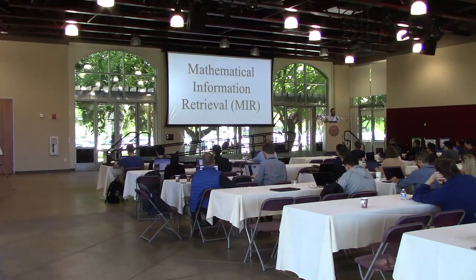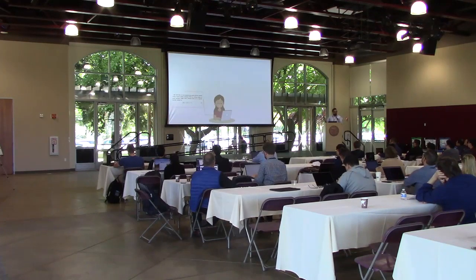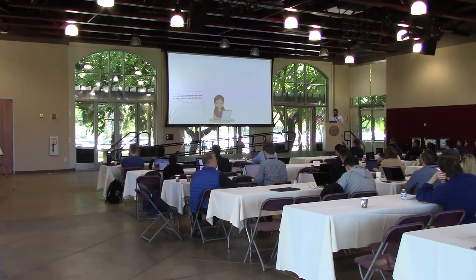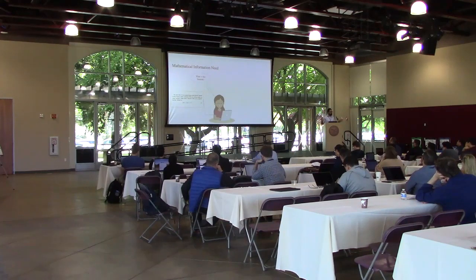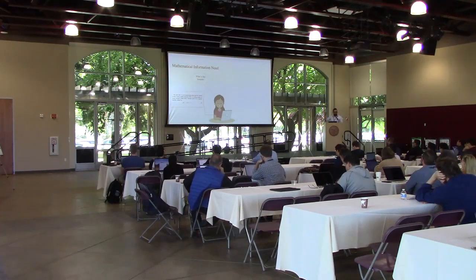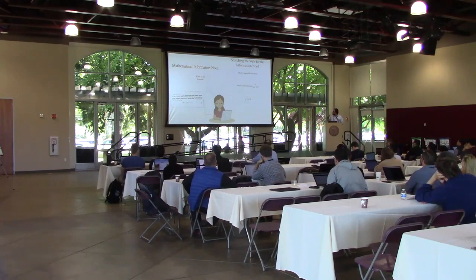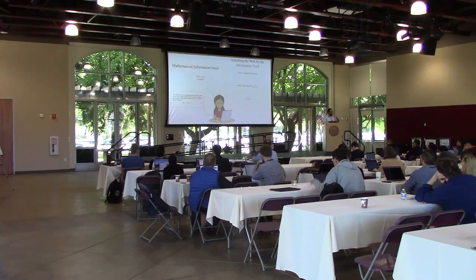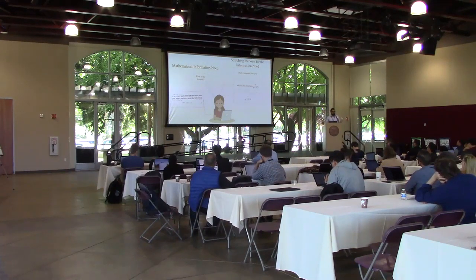So what is a mathematical information retrieval, or MIR, system? Let's consider this researcher here — she is reading a paper and she sees a signal function with that definition. Same as other information retrieval systems, this researcher has some information needs. In a MIR system, the information needed is about mathematical concepts. She wants to know what this formula is. There are three ways she can issue the query: using only text, like 'what is signal function,' or a combination of text and formula, or she can write down the formula as a query.